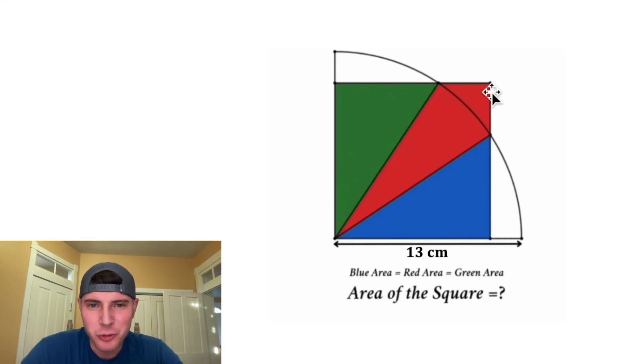Hey guys, this looks like a fun one. We have a square right here split up into three regions, and all three of them have the same area. And then we have a quarter circle with a radius of 13. And the question is asking, what is the area of the square?